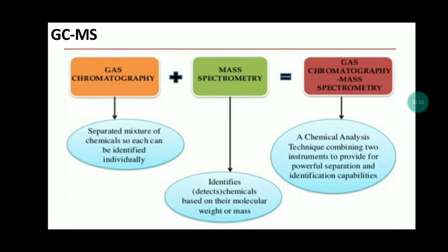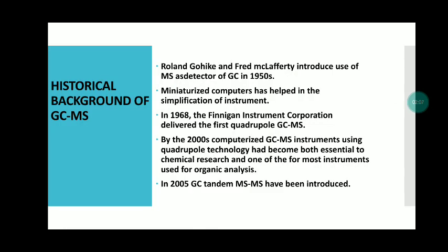GCMS is a chemical analysis technique combining two instruments, providing powerful separation and identification capabilities. Regarding the historical background of GCMS: Roland Kovats and Fred McLafferty introduced the use of MS as a detector for GC in the 1950s.